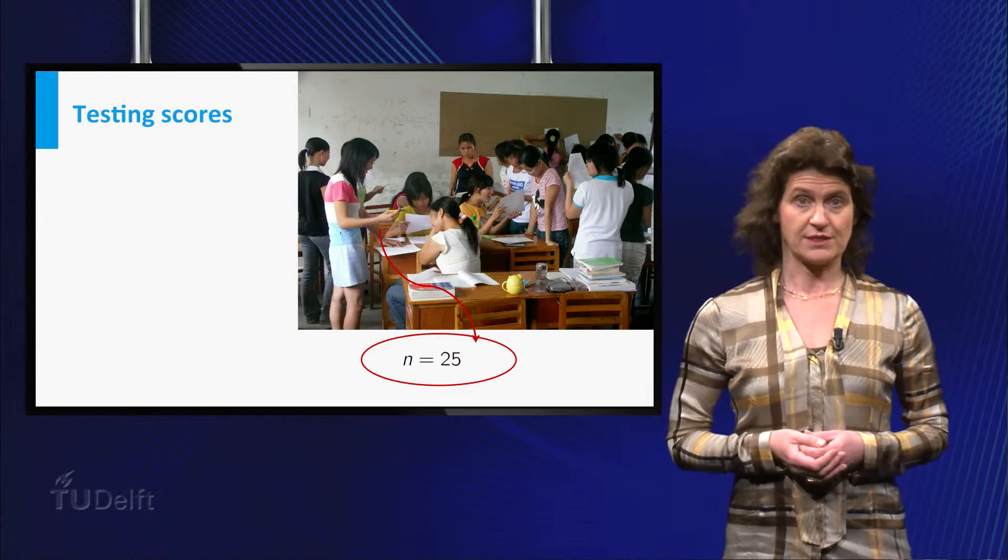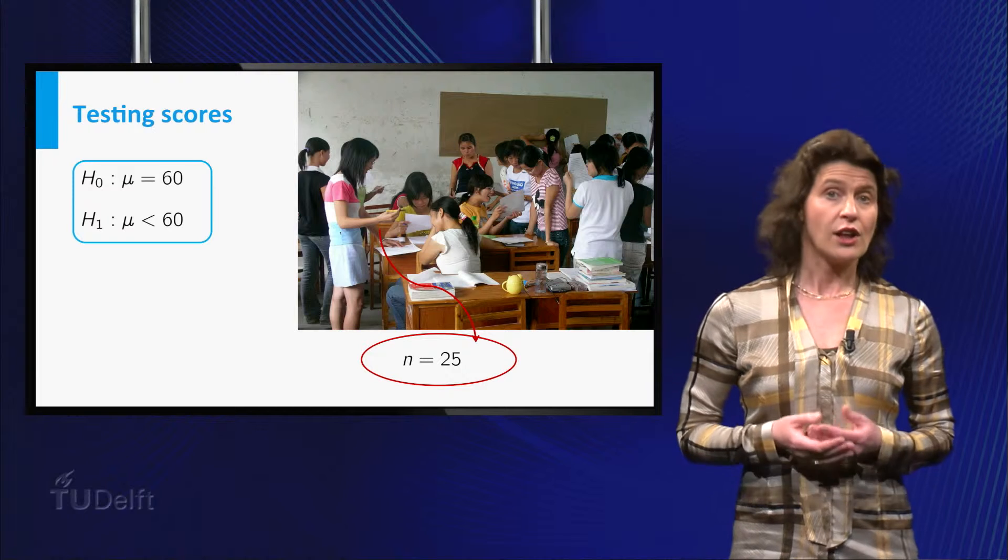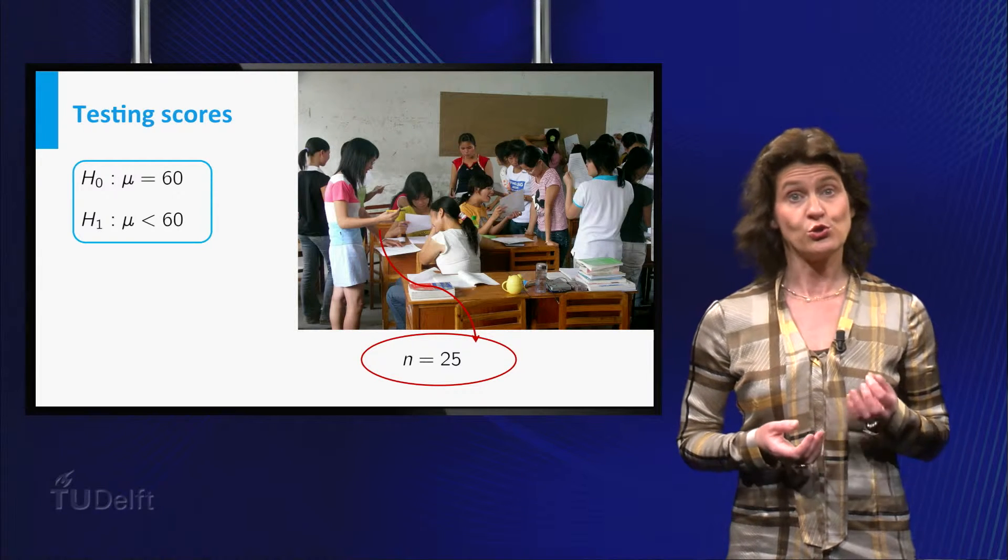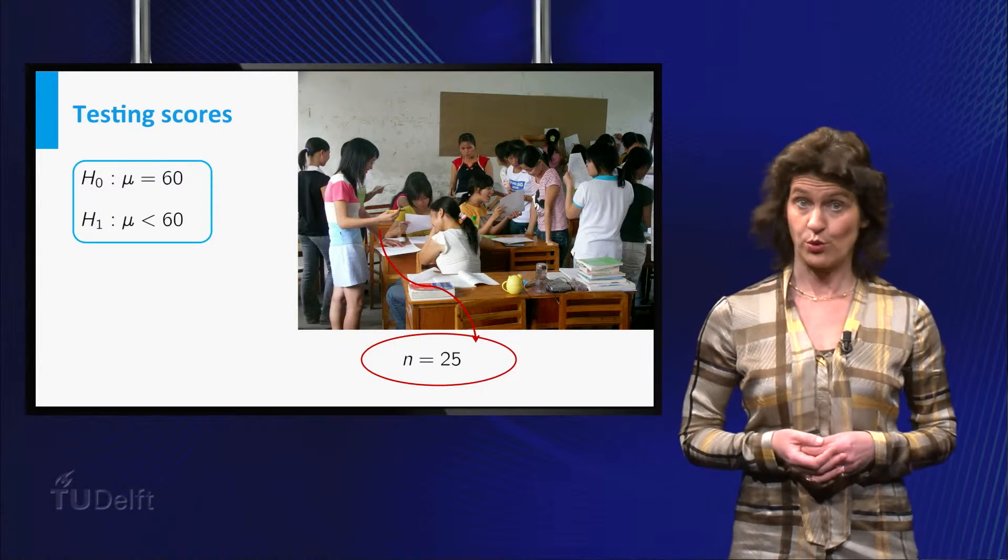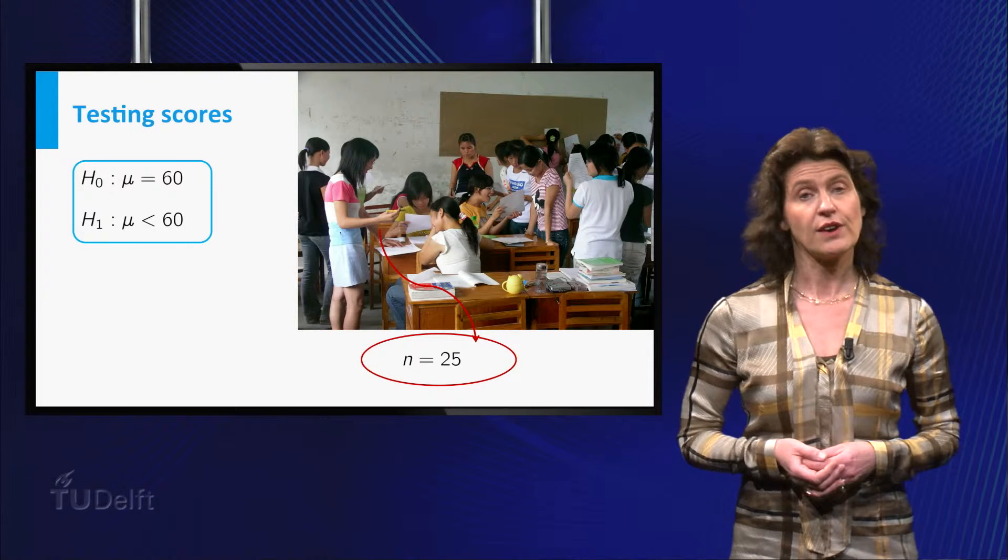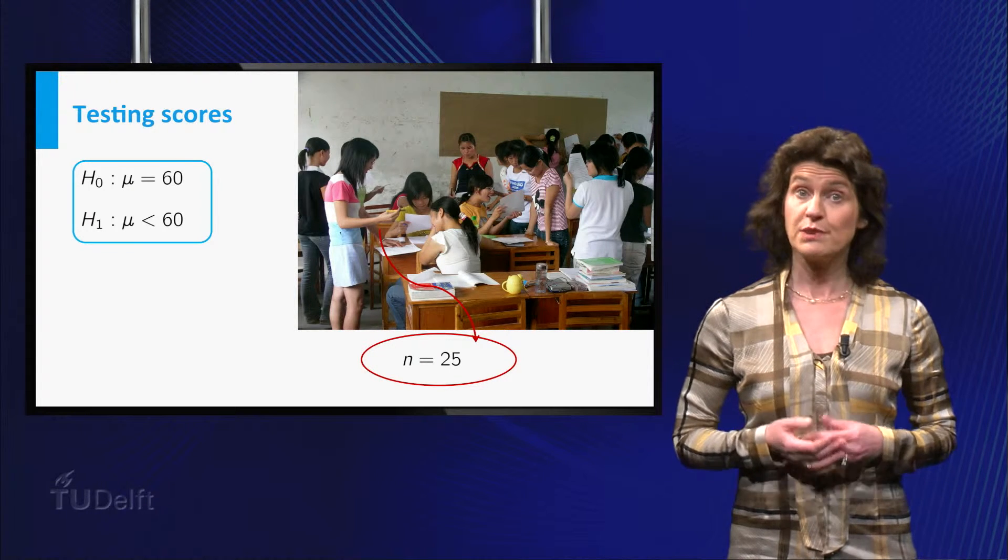What hypotheses do you test? Well, the null hypothesis is that the school does meet the national norm of 60 points. And the alternative hypothesis is that the score is below this average.